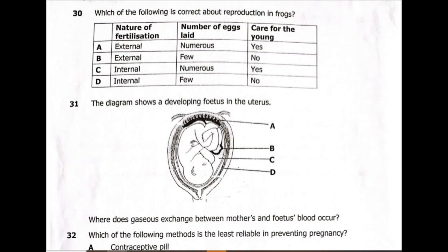Let's go to question 30: which of the following is correct about reproduction in frogs? Fertilization in frogs is external — it occurs outside the body of the organism. The number of eggs laid is numerous, but the ones that hatch into young ones are few. There is no care for the young. The answer is B. Frogs are oviparous, where reproduction occurs outside the body.